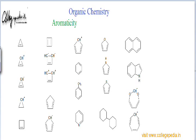The first molecule is cyclopropene. The first criteria is planarity — we have to check whether cyclopropene is planar or not. For planarity, you have to see whether all the atoms are sp2 hybridized or not. If all the atoms are not sp2 hybridized, the molecule cannot be planar, because sp2 hybridization only offers a planar geometry — that is, trigonal planar.